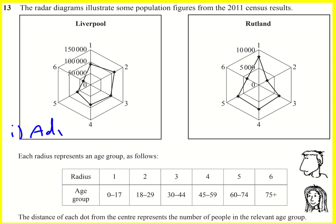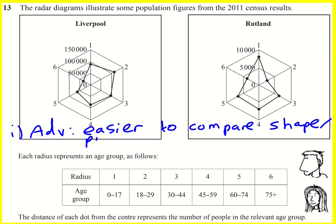For the advantage: using different scales makes it easier to compare the shape and also the proportions. We could more easily calculate the percentage of people who are between 0 and 17, or at least see which is the highest proportion. For example, you can see Rutland has a higher proportion of people between 0 and 17 than Liverpool.